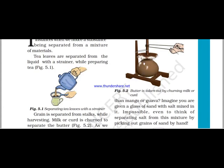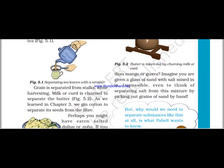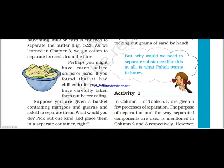Similarly, butter can be separated from the curd or milk by churning. Churning means when we rotate the curd or milk at a very high speed, then butter is separated from them. So this is also an example of separation.